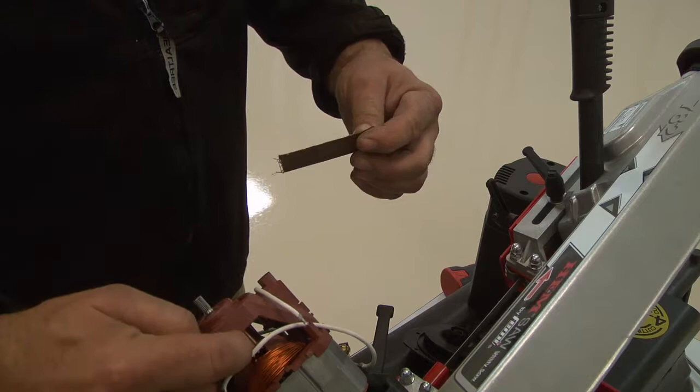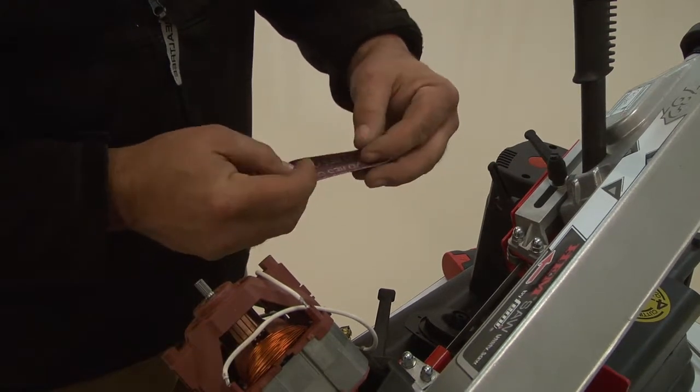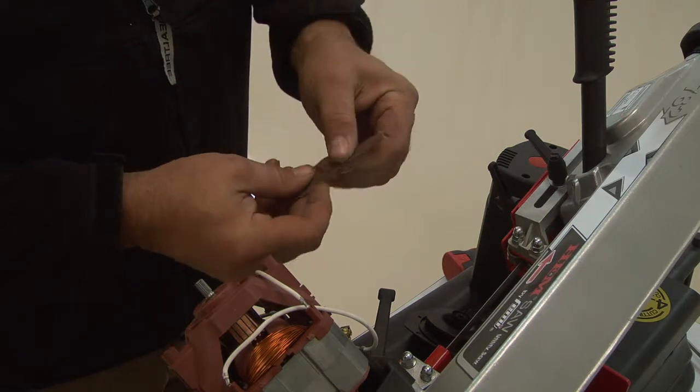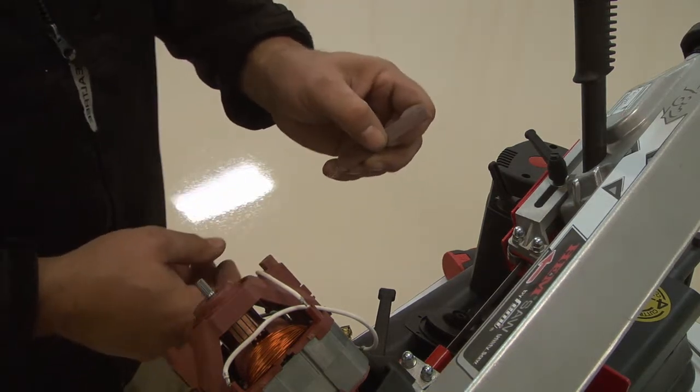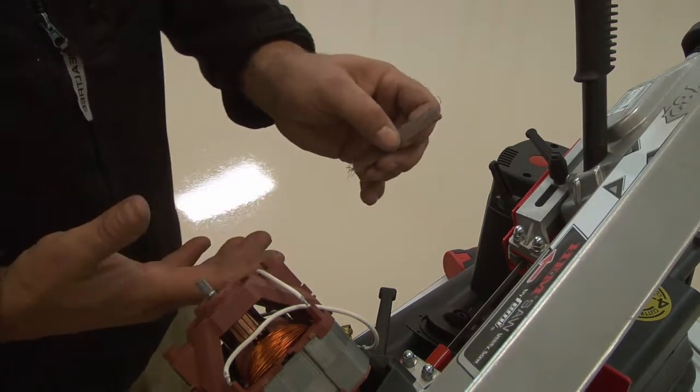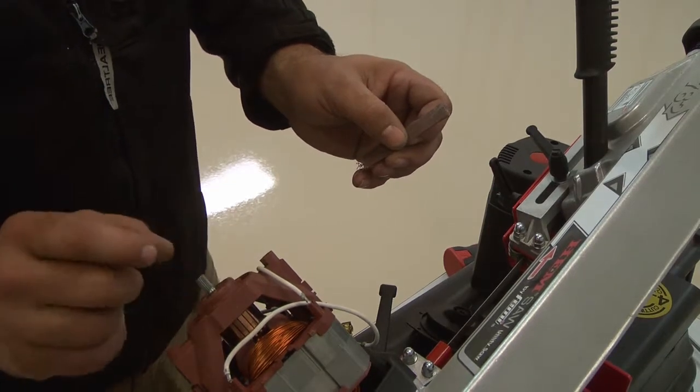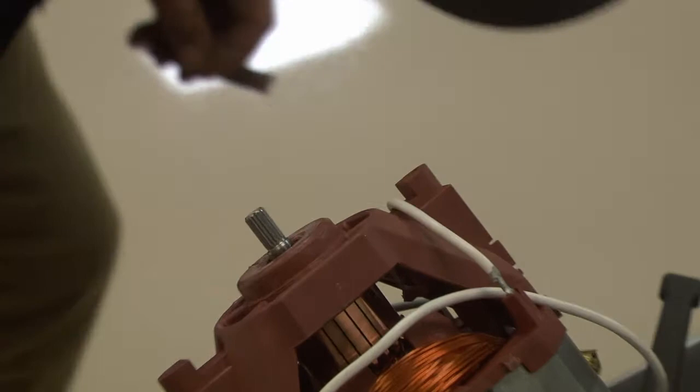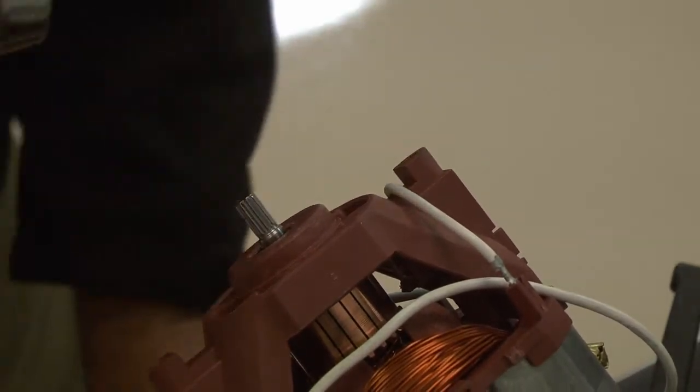The commutator is now exposed enough to enable cleaning. The motor shaft can be spun by hand, but it is more efficient to use an adjustable speed drill set on slow speed to spin the armature while holding a folded strip of fine grit abrasive cloth against the armature commutator.